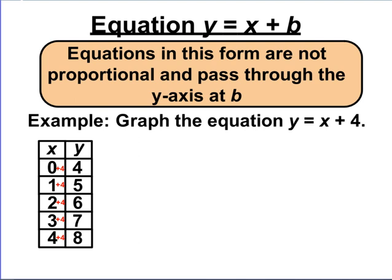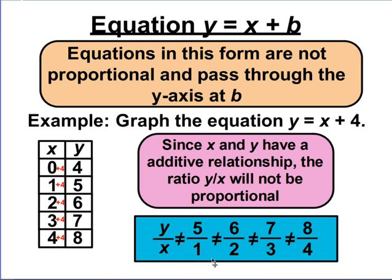Let's take a look at what the ratios are. If I write y over x for each ordered pair — 5 over 1, 6 over 2, 7 over 3, 8 over 4 — none of these fractions or ratios are equal to each other, so it's not proportional. That also means that unless the y-intercept is 0, the line will not pass through the origin. Since the y-intercept in this equation is supposed to be 4, it should not pass through the origin.